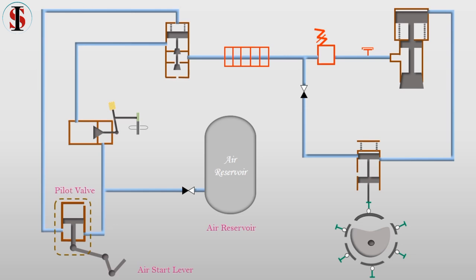Pilot valve. The pilot air enables compressed air from the receiver to enter directly to the engine cylinders. Turning gear interlock — it prevents the admission of starting air to the engine cylinder when the turning gear is engaged.